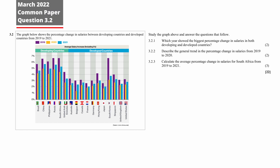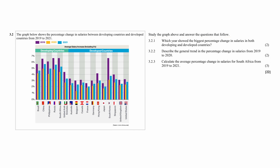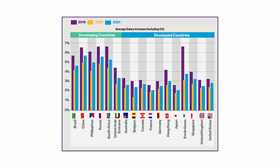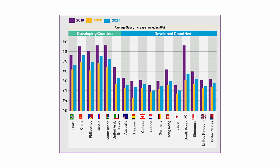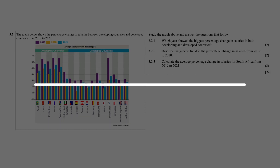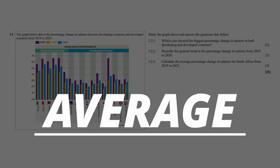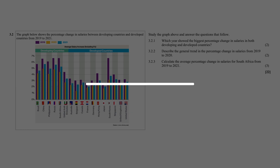Question 3.2 consists of three data handling questions designed to assess your ability to analyze data presented in a compound bar graph. I give this question an overall difficulty rating of 5 out of 10. Let's take a look at this question in detail to see why.